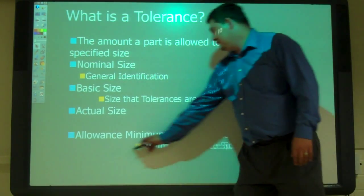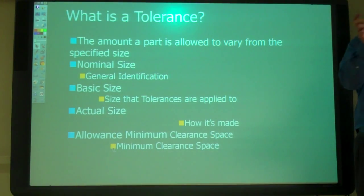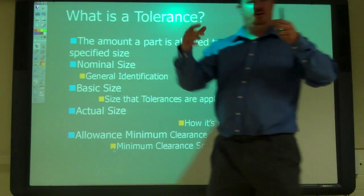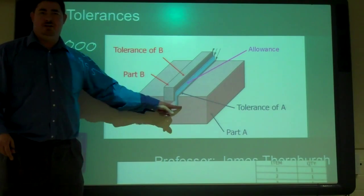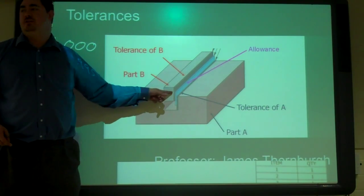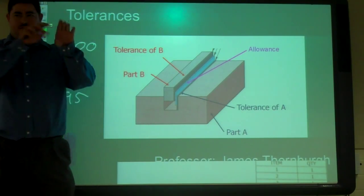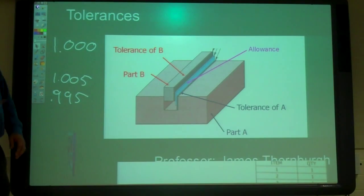And then the minimum clearance is the space between them in the worst case scenario. So when the hole is the smallest and the shaft is the biggest. And we usually use the terms hole and shaft because the hole's something that's going to go into. So in this case, we would call this the hole dimension and not the shaft dimension because the shaft is a thing that's going into.